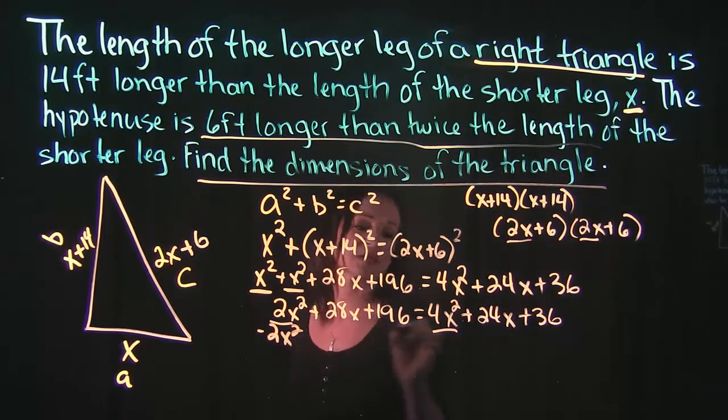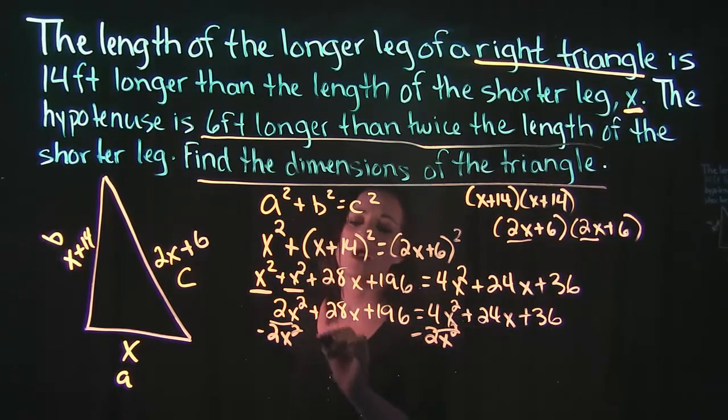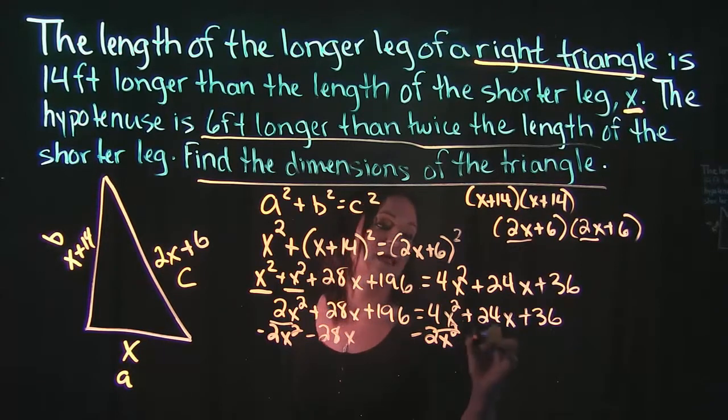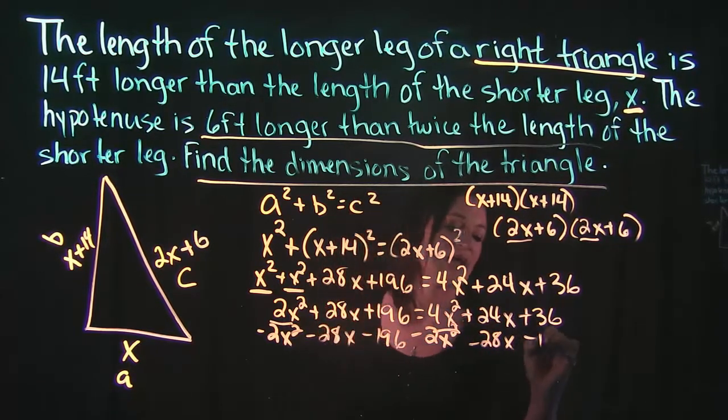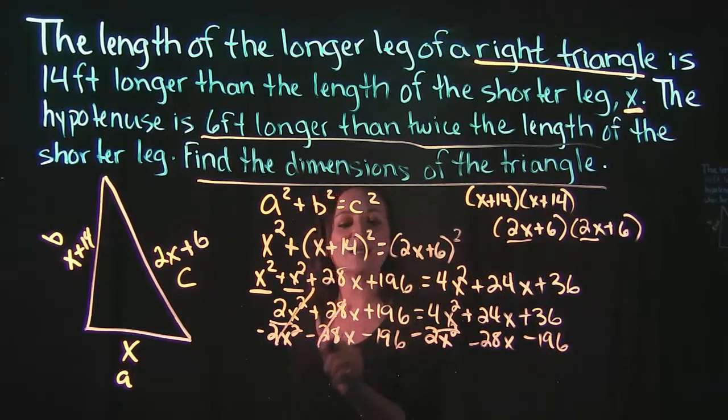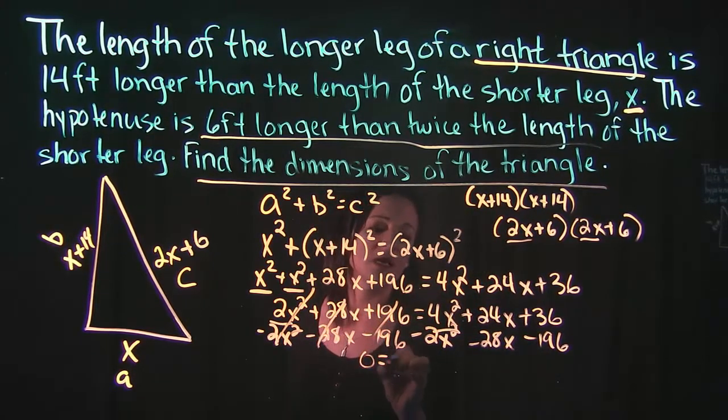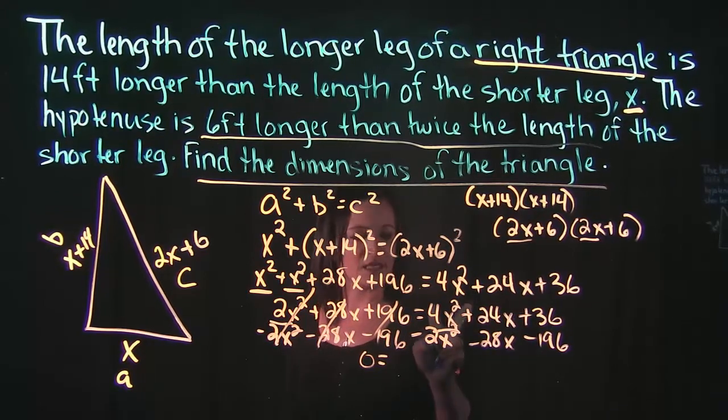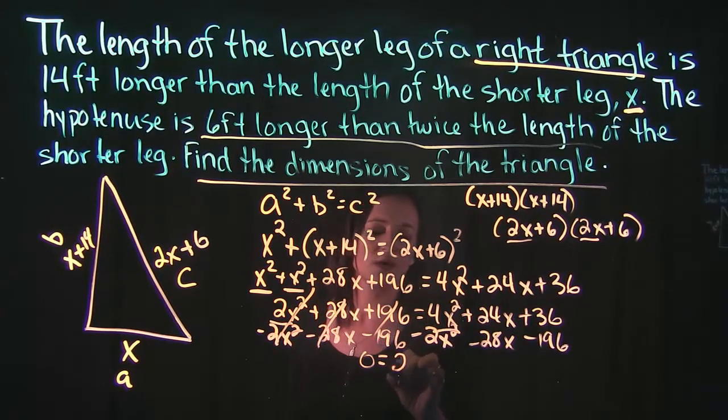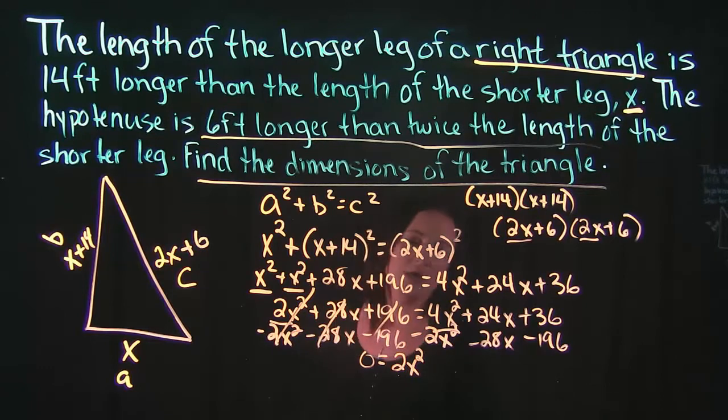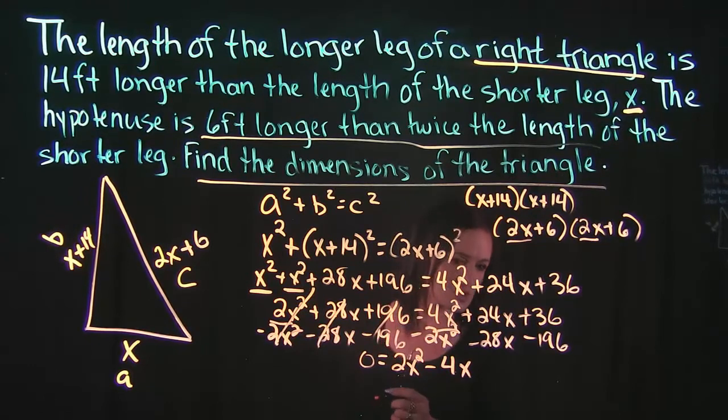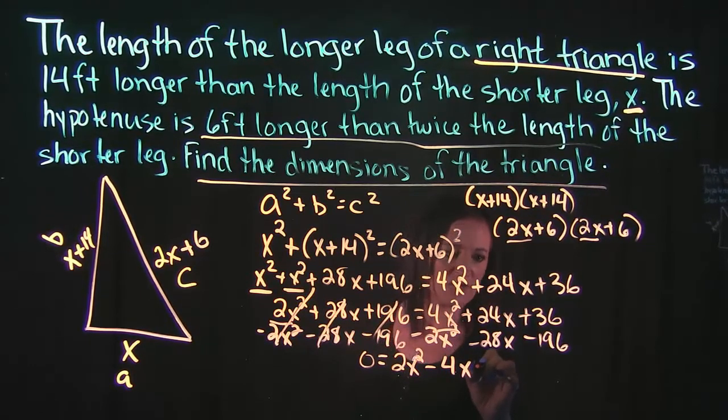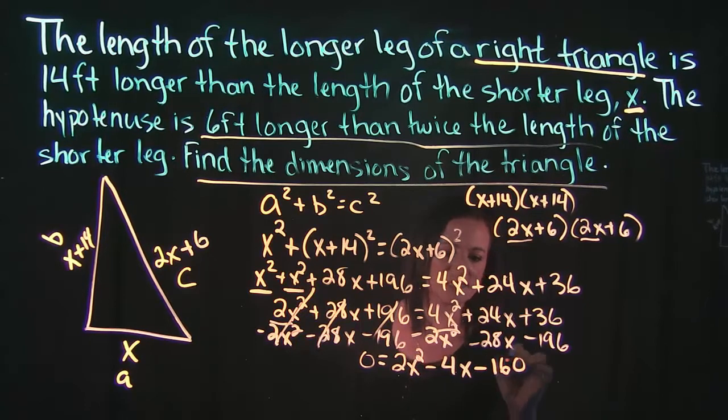So I'm going to subtract the 2x squared to both sides, I'm going to subtract the 28 to both sides, and then I'm going to subtract the 196 to both sides. So that cancels on the left-hand side and on the right-hand side, 4x squared minus 2x squared is 2x squared, 24x minus 28x gives us negative 4x, and 36 minus 196 is negative 160.